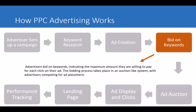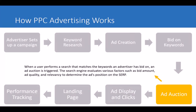Next, you bid on keywords — you actually do this when you are setting up your campaign. Advertisers bid on keywords, indicating the maximum amount they are willing to pay for each click on their ad. That's why it's called PPC: pay-per-click. The bidding process takes place in an auction-like system with advertisers competing for ad placement.